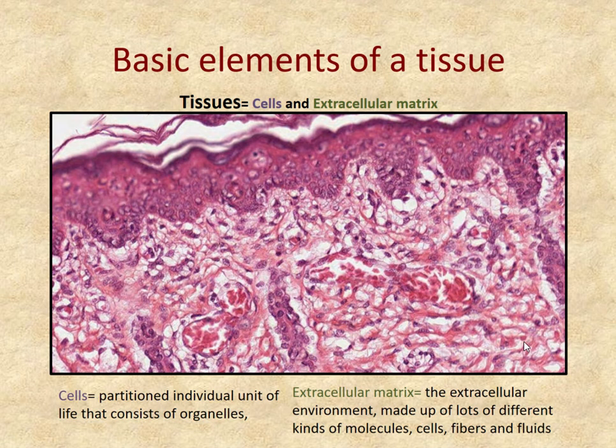A cell is that individual unit of life we talked about, with specific organelles and a plasma membrane. The extracellular matrix is essentially anything between cells — it has many different types of molecules, and very importantly it has fibers and fluid, a lot of which is water.